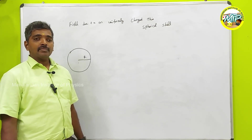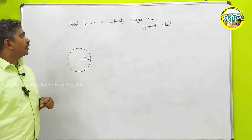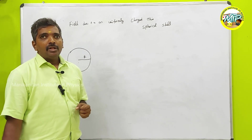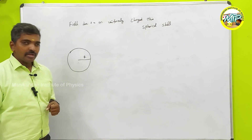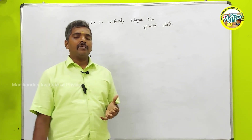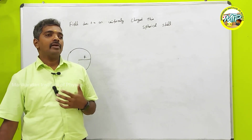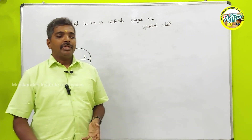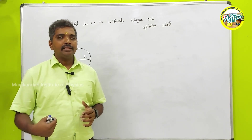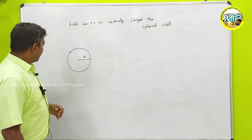Hi friends, today I am going to explain how to find the electric field due to a uniformly charged thin spherical shell. In the last class we discussed Gauss's law and the electric field due to an infinitely long wire and infinitely long thin sheet. If you have not yet watched that video, I will give the link in the description. Today I am going to explain this part.